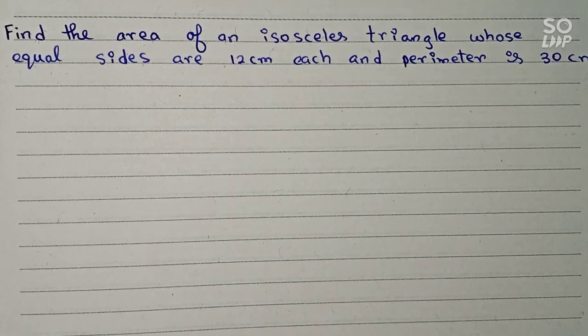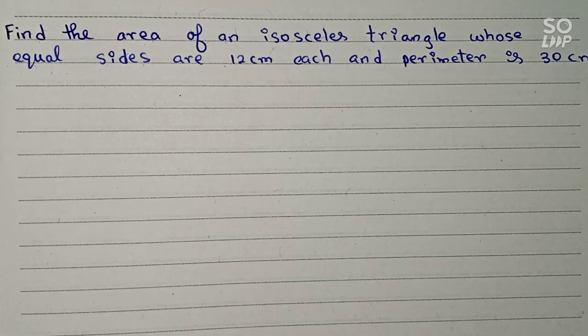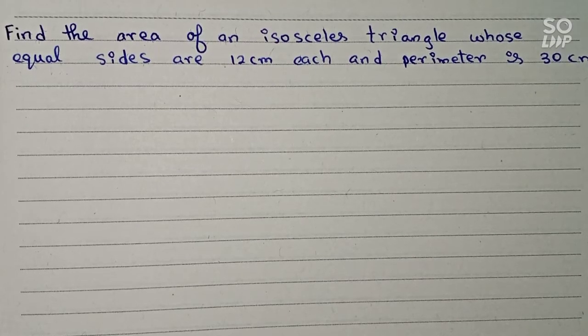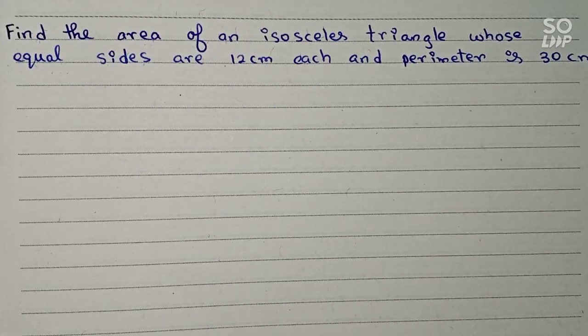Hello guys, welcome to this video. In this video our question is: find the area of an isosceles triangle whose equal sides are 12 centimeters each and perimeter is 30 centimeters. In this question, the two sides of the isosceles triangle are given and the perimeter is given.